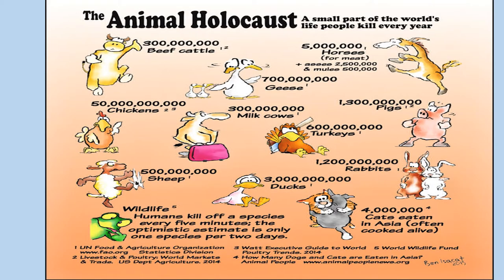This is a very graphic representation of a certain way of thinking about the human relationship to animals — largely as a source of food. The sheer numbers every year are quite eye-catching: the numbers of different animal species raised and killed for food. Obviously there are issues of humane treatment here, and the more troubling issue is the wildlife and the number of species that are killed off, which has a lot of repercussions.